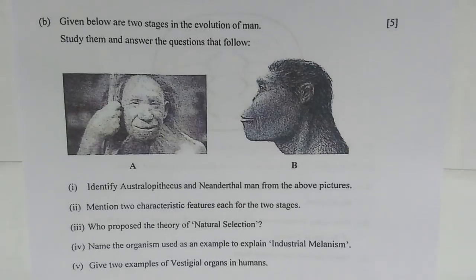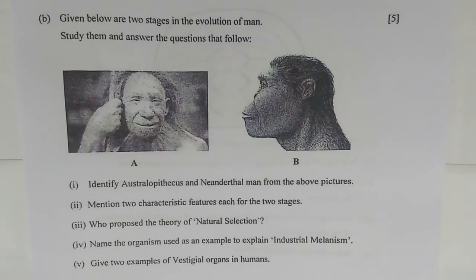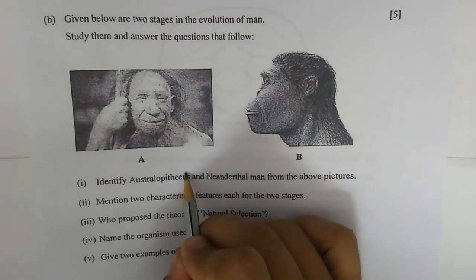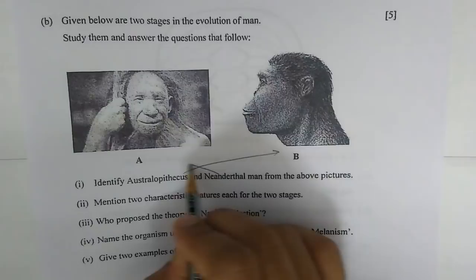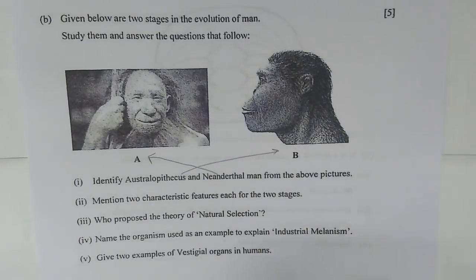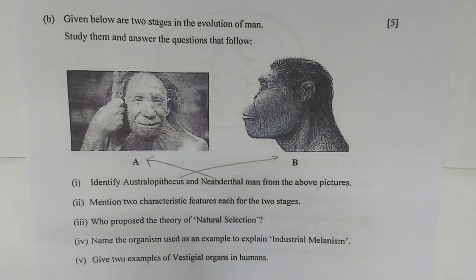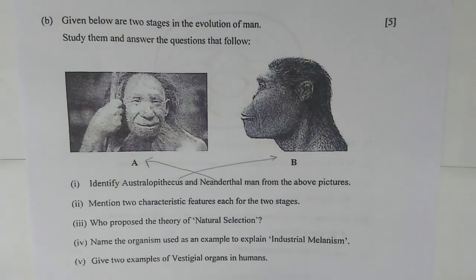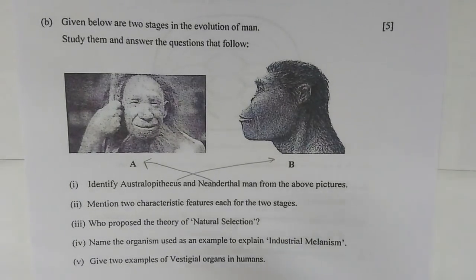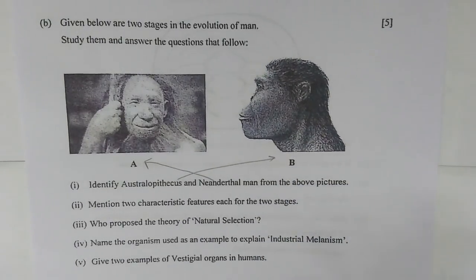Question 5b: Given below are two stages in the evolution of man. Number one — identify Australopithecus and Neanderthal man. Australopithecus is figure B and Neanderthal is figure A. Number two — mention two characteristic features of each stage. For Neanderthal (A): broad chest and large hands and feet. For Australopithecus (B): small brain like apes and walked on two legs like humans.